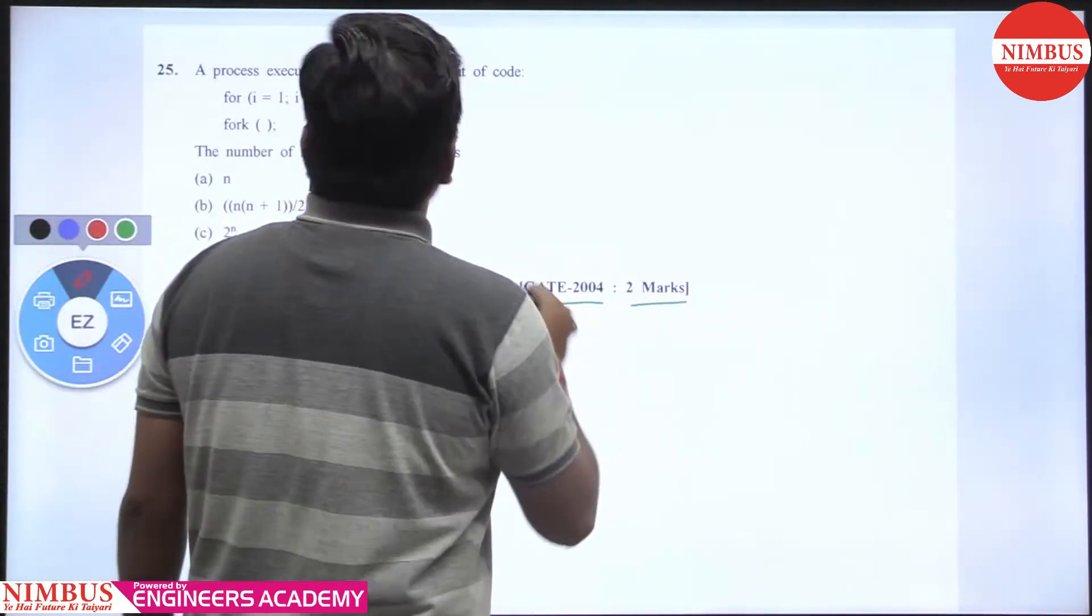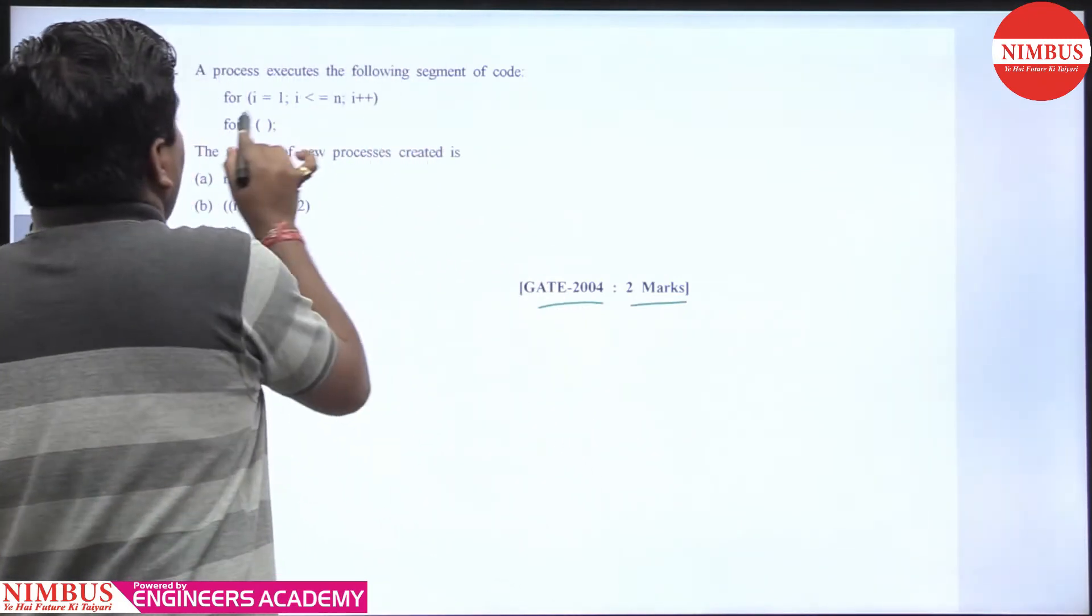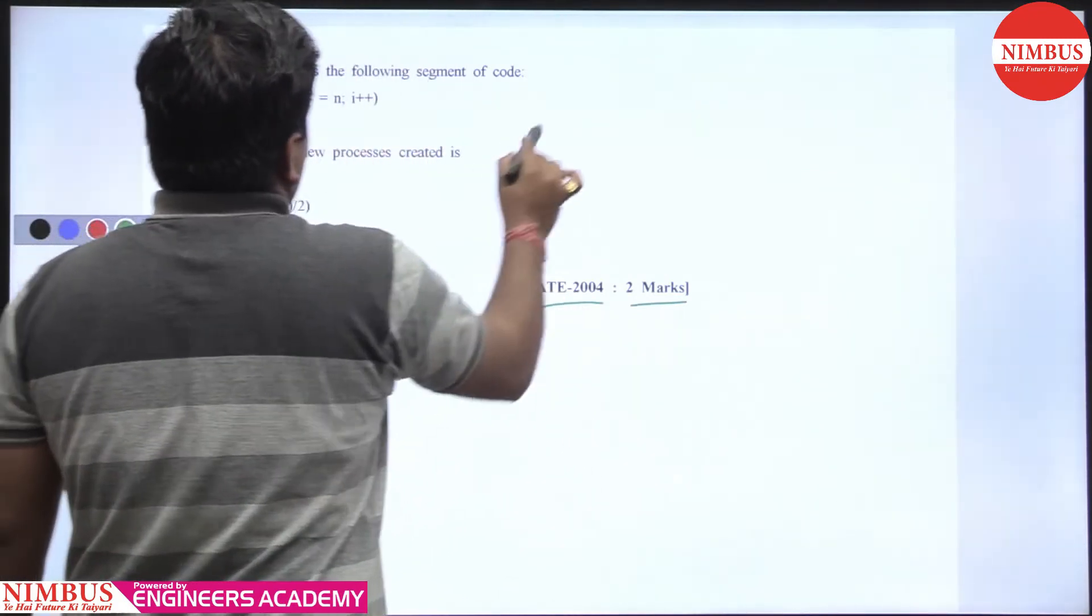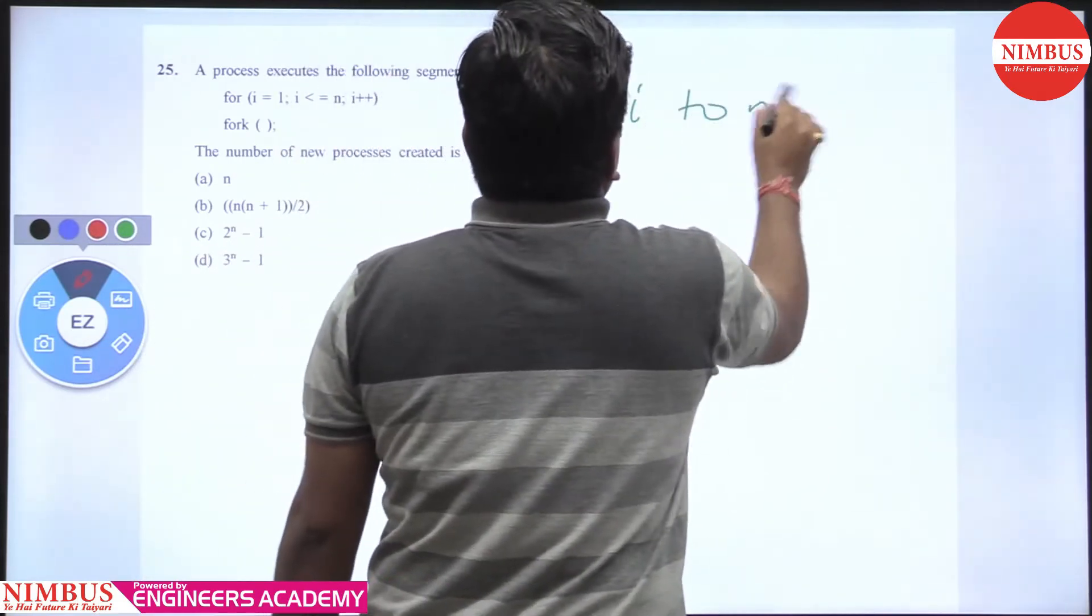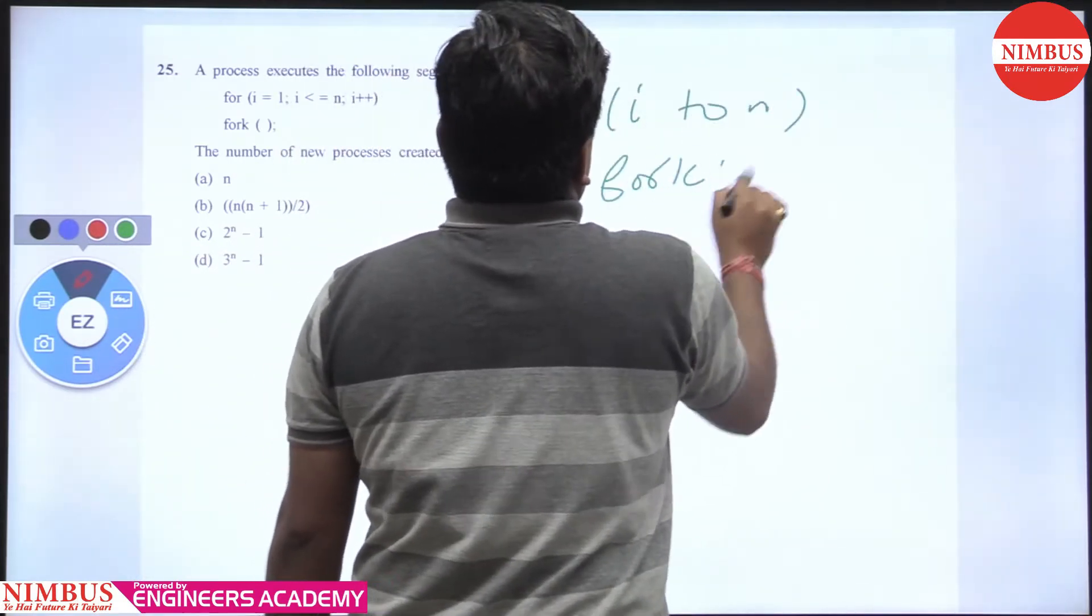Next question is GATE 2004, 2 marks. What is the question? A process executes the following code segment: there is a for loop from i=1 to n, and fork has been called. What is the meaning of fork?